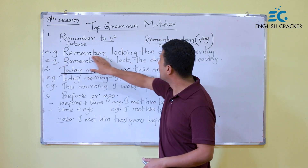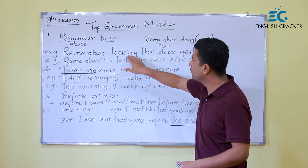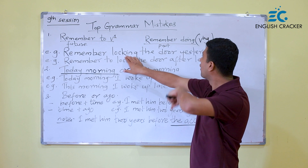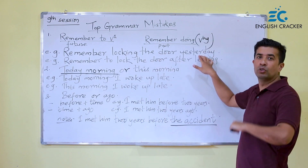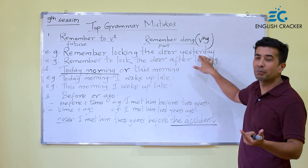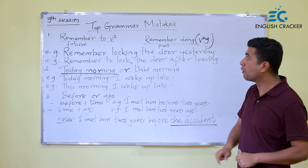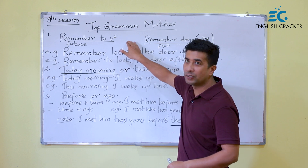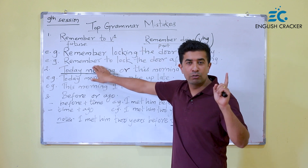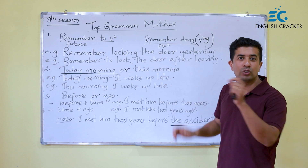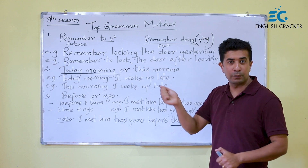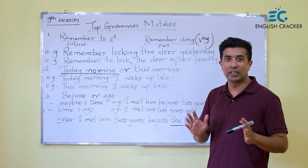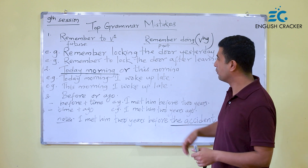Example number one: 'Remember locking the door yesterday.' When you are talking about the past, use remember plus V-ing. 'Remember to lock the door after leaving' — when you are going to lock the door after leaving, this refers to the future. Is this okay?